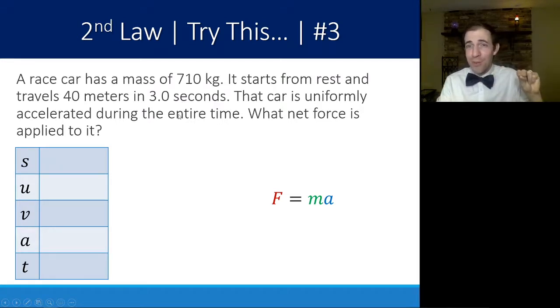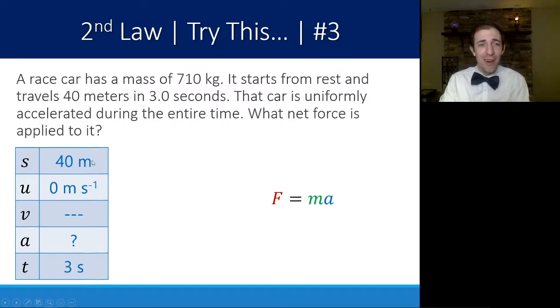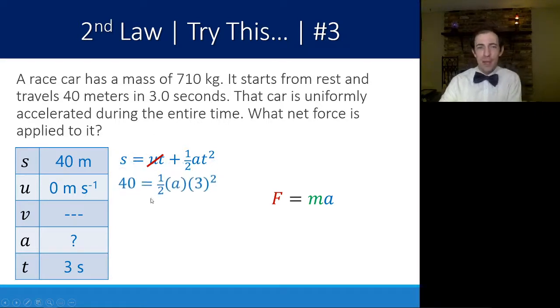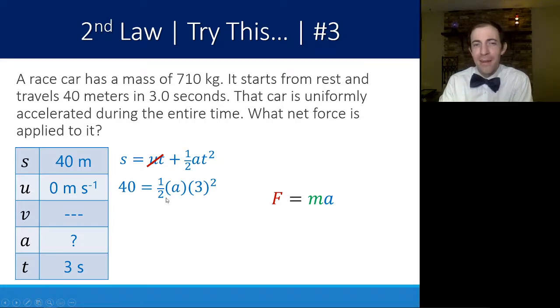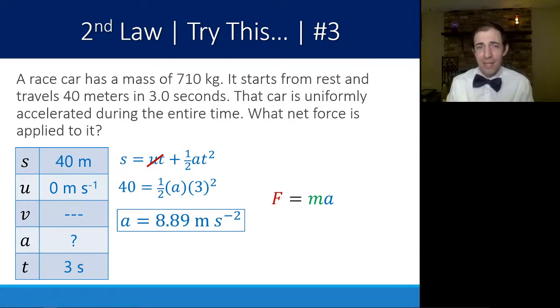Nowhere in here does it give me the acceleration. But if I know those three, I can find acceleration. Let's plug in what I know, what I want to find, and then what I don't need. v is the variable. I don't need the final velocity, which helps me narrow down the equation that I want. I'm going to use this one here. s is equal to ut times one half at squared. If u is zero, this ut term cancels itself out. So I end up with s is equal to one half times at squared. Plugging in what I know, I get 40 is equal to one half a three squared. Rearranging solving for a, I'll get 8.89 meters per second squared.